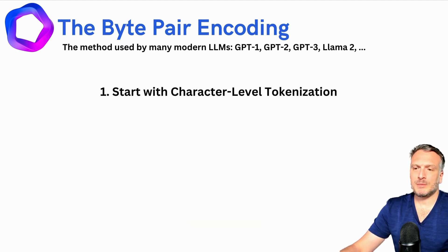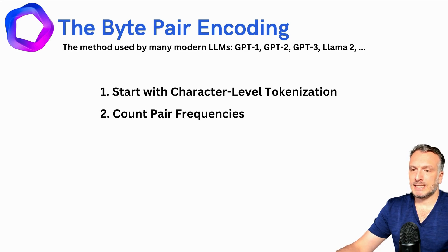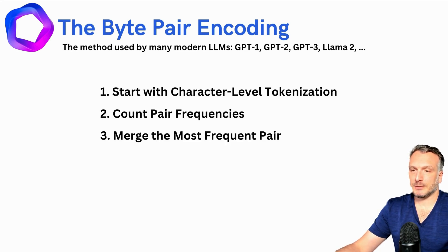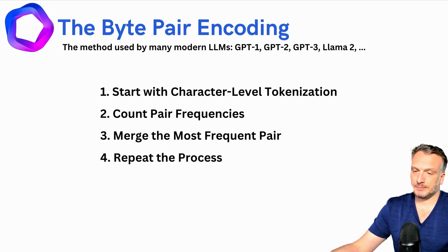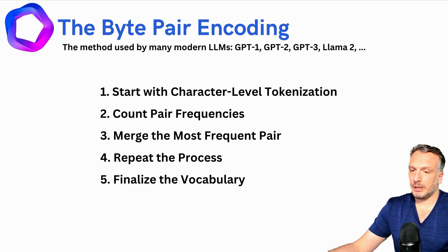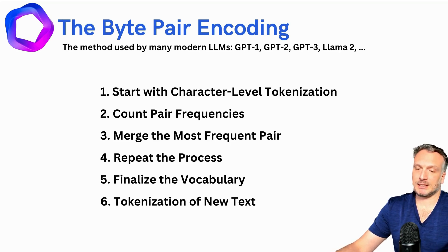To summarize: we start with character-level tokenization, then count the pair frequencies, merge the most frequent pair, and repeat the process. At the end we consolidate the vocabulary, and we can use that vocabulary to tokenize new text.